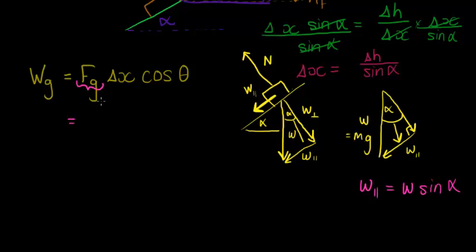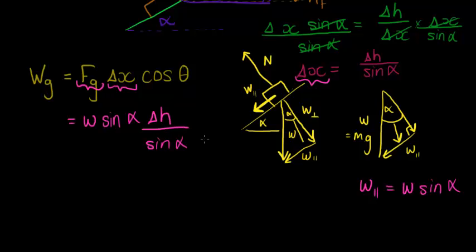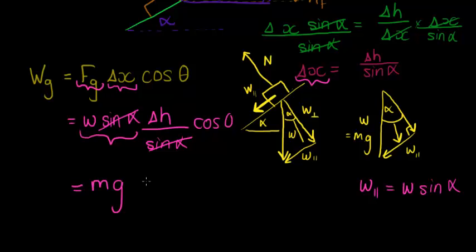So I replace the force in the work formula with weight times sine of alpha, times delta x. But delta x can also be replaced with delta h over sine of alpha. When I substitute that in, the sine of alpha terms cancel, and cos of zero equals one because the component of weight and the displacement are in the same direction. This simplifies to weight — which is mass times gravity — times delta h.